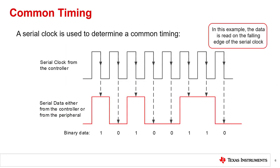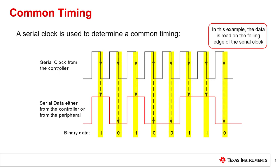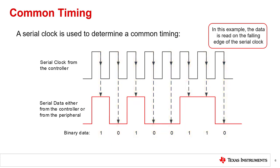Communications also require common timing between the controller and the peripheral device. The two devices must agree on the timing, knowing when the voltage level should be read to define when the bit transmission occurs. Often, a serial clock from the controller is used to define the timing of communication. Reading the bit may occur on the rising or falling edge of the serial clock. Timing is important to communications and is described in a different video.